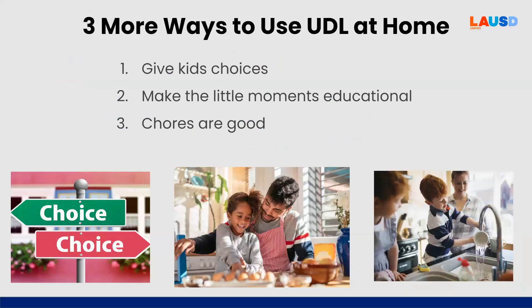Three more ways to use UDL at home may include daily tasks. One thing we can do is to give children control and choice over as much as possible. Giving children choices develops ownership, builds confidence, and helps them solve problems. Giving children choices maximizes learning because children are more likely to actively commit and engage in an activity if they've chosen it themselves. One of the best ways to start is to give a child two choices that the parent or caregiver approves of, and then let the child choose between the two.